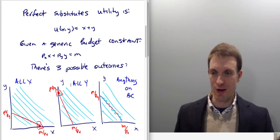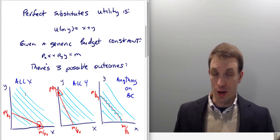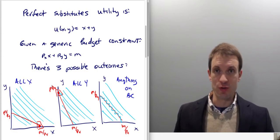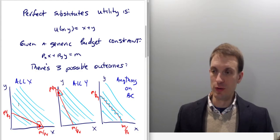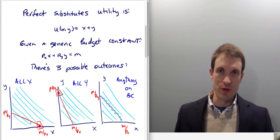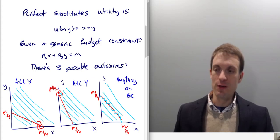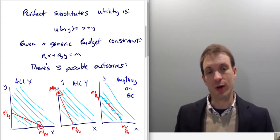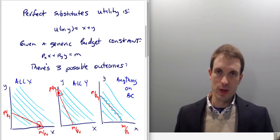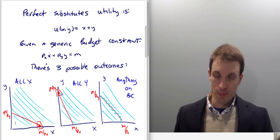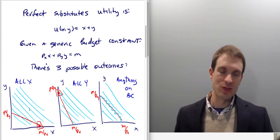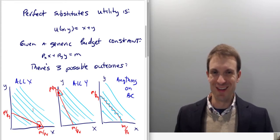Economists recognize that because we're ultimately comparing marginal rate of substitution to the price ratio, the signs cancel. With perfect substitutes utility, what it boils down to is comparing the slope of the indifference curves to the budget constraint. There are three different outcomes: the budget constraint could be flatter than the indifference curves, steeper than the indifference curves, or have the same slope as the indifference curves. We want to consume the most preferred affordable bundle — the highest indifference curve that crosses our budget constraint, furthest to the upper right.